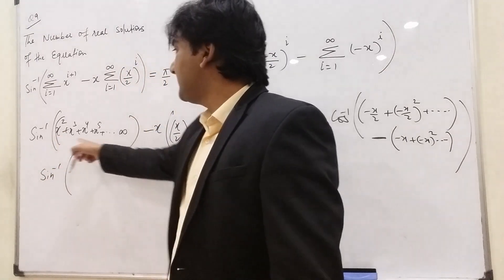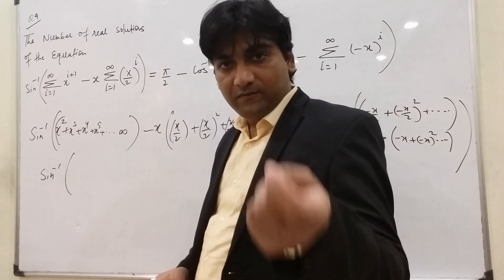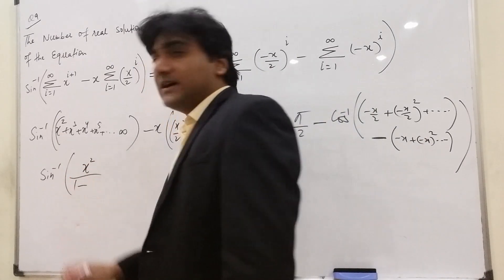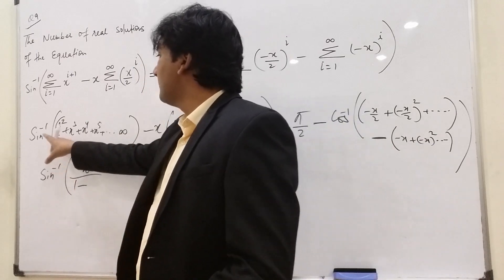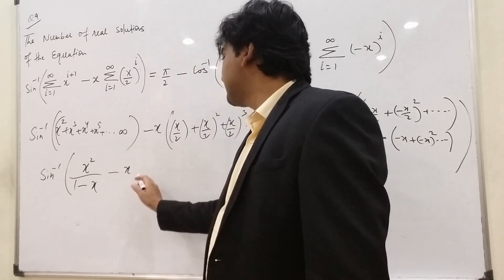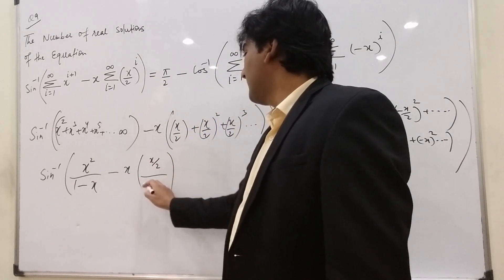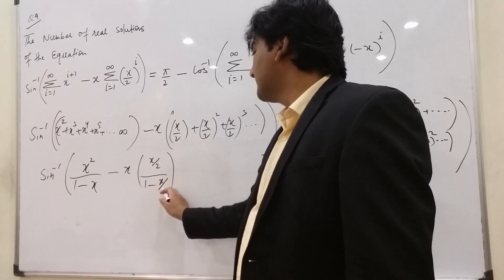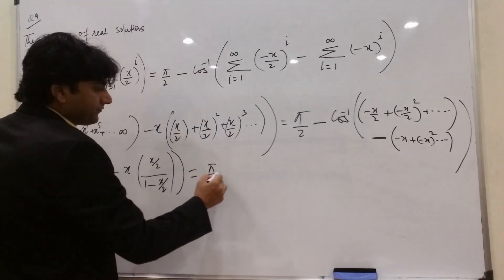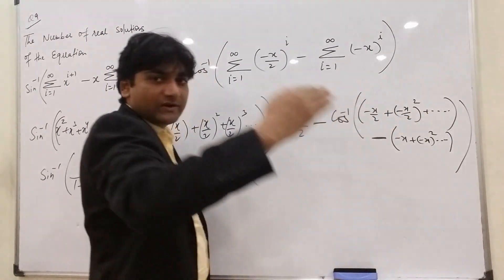Now apply the GP formula. The first summation: first term a = x², common ratio r = x³/x² = x, so the sum is x²/(1−x). Then minus x. For the (x/2)^i series: first term is x/2 and common ratio is x/2, so sum is (x/2)/(1−x/2). The sine inverse side is complete, equals π/2 minus cos inverse.